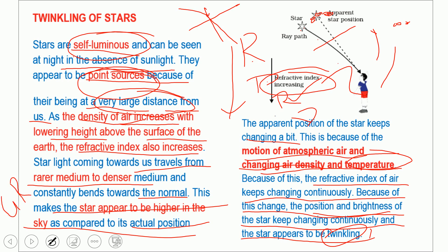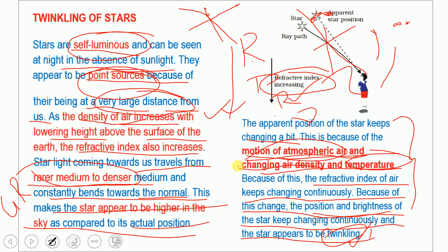Because of this bending, the star appears higher in the sky than its actual position. The apparent position of the star keeps changing because of changing air density and temperature. Because the refractive index of the air keeps changing continuously, the position and brightness of the star keep changing constantly, and the star appears to be twinkling.